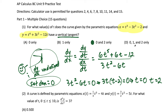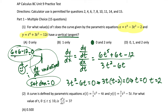One other answer that jumped out was choice D, which has one extra value t equals 1. But if we plug t equals 1 into the numerator, we get 6 plus 6 minus 12, which equals zero. Plugging into the denominator gives 3 minus 6, which is negative 3. So dy/dx equals 0 divided by negative 3, which is zero — that's a horizontal tangent, not a vertical one. So choice C is correct.